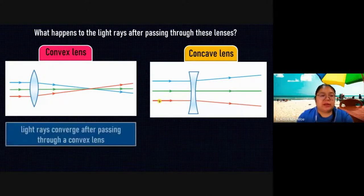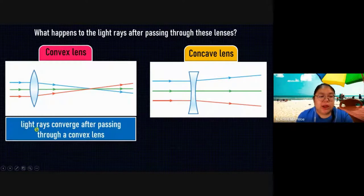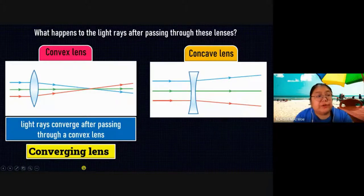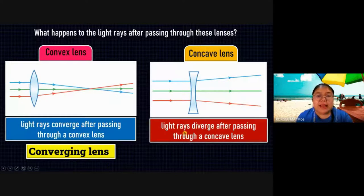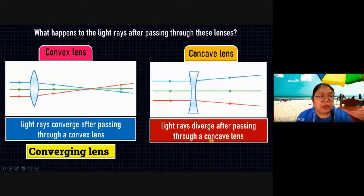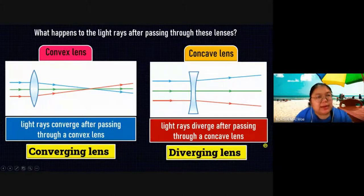So from here, light rays converge after passing through the convex lens, so we can call it a converging lens because they focus to one point. For the concave, light rays diverge — they open wider — so we call it a diverging lens.